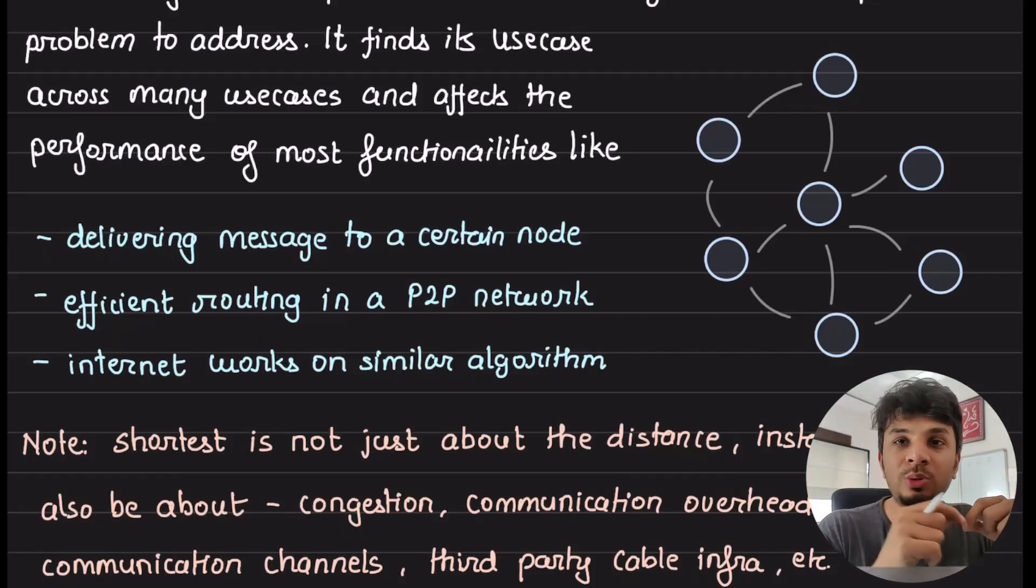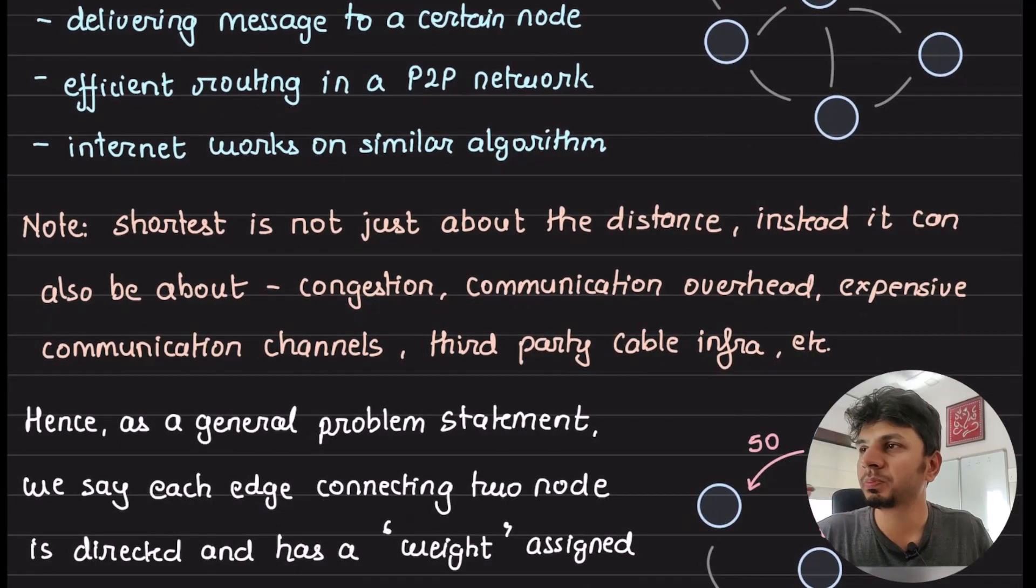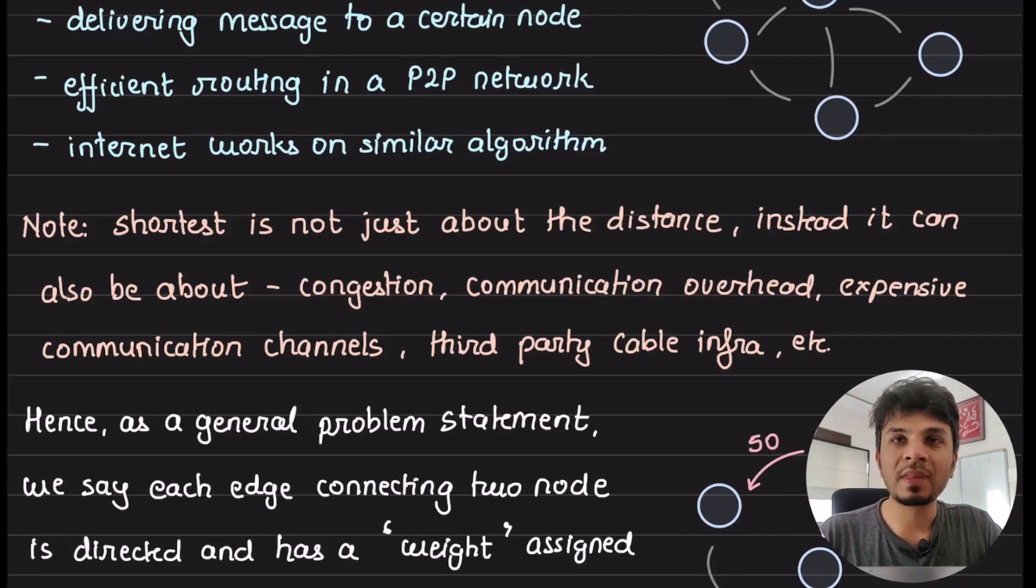Second is when you want to do efficient routing in a P2P network. Again, a shortest path system would come in. Then an almost entire decentralized architecture like the internet - if I want to go to that mega scale, it works on this very similar algorithm. Not the entire internet scale, but on subscales of that, it operates exactly like this.